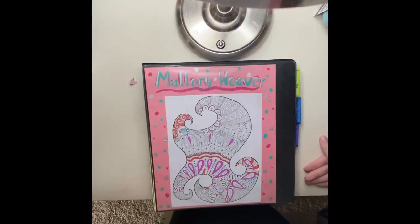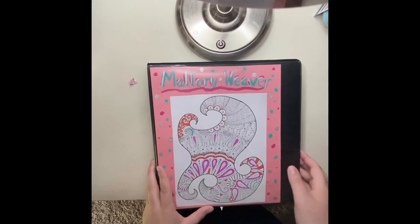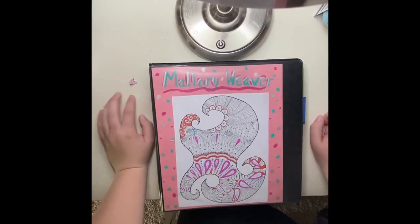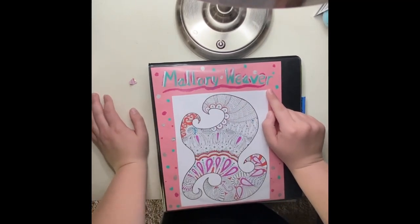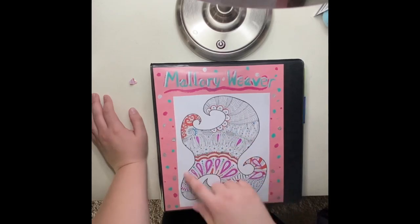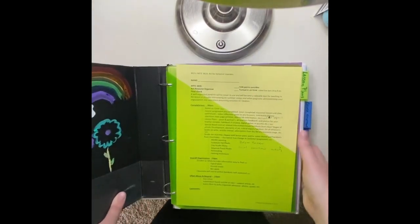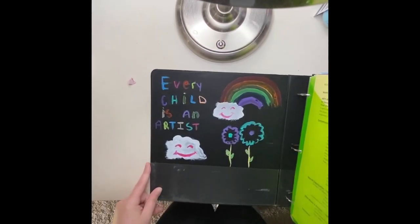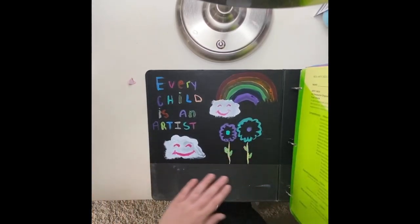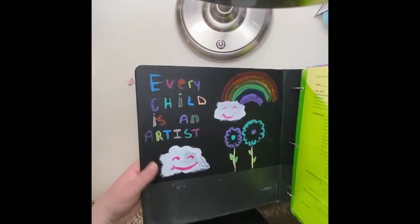Alright, so this is my binder video. The front page I used acrylic paint to paint my name and just a fun fill-in color page that I added. And then on this side I put 'Every Child is an Artist' with some rainbows, just to make it fun.